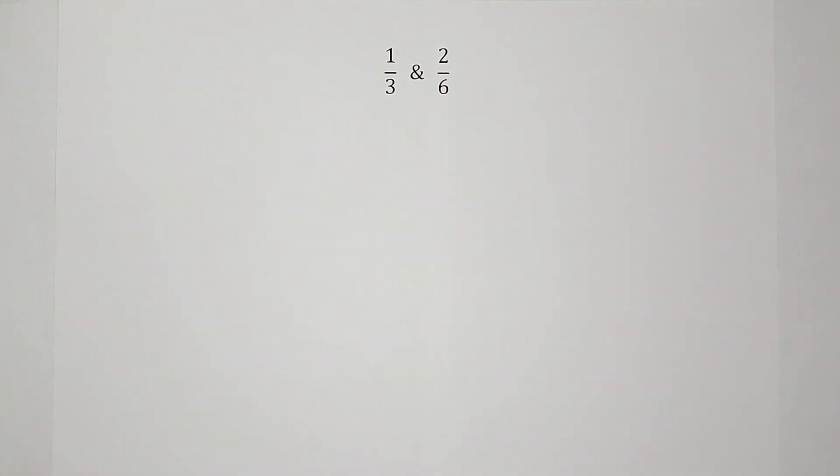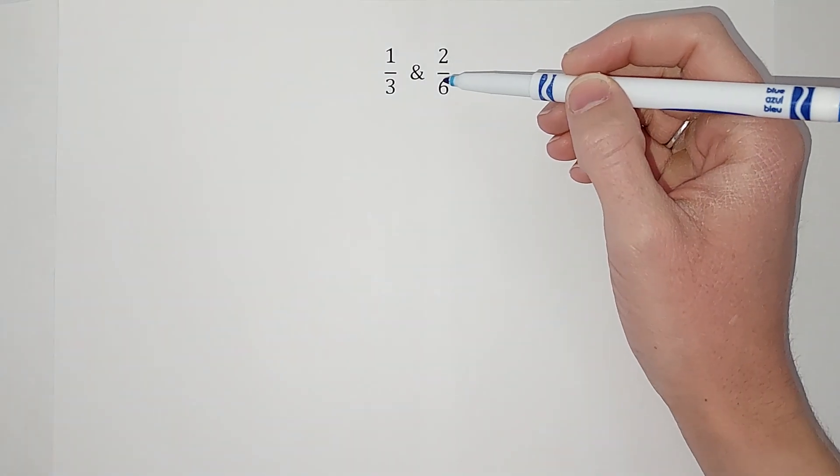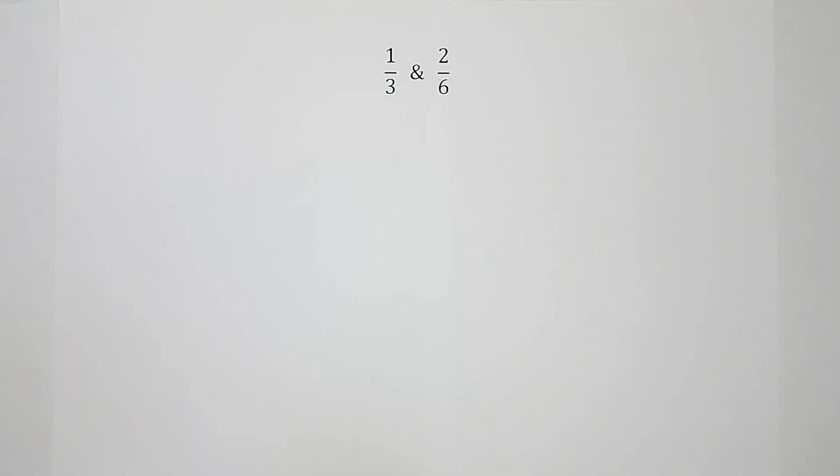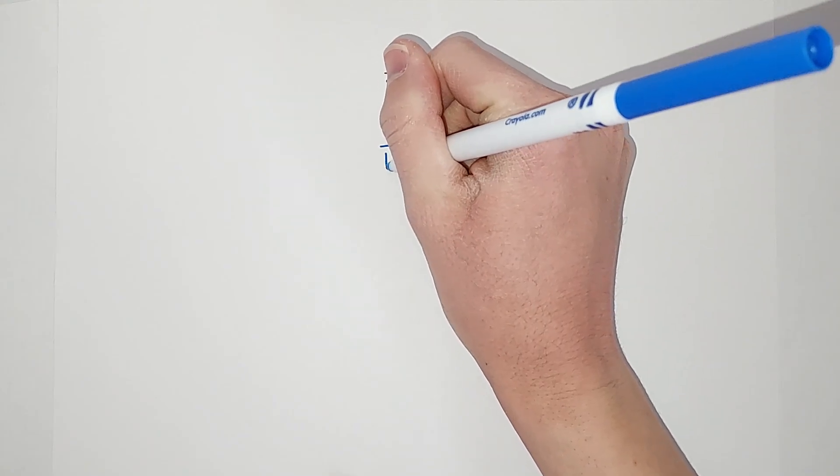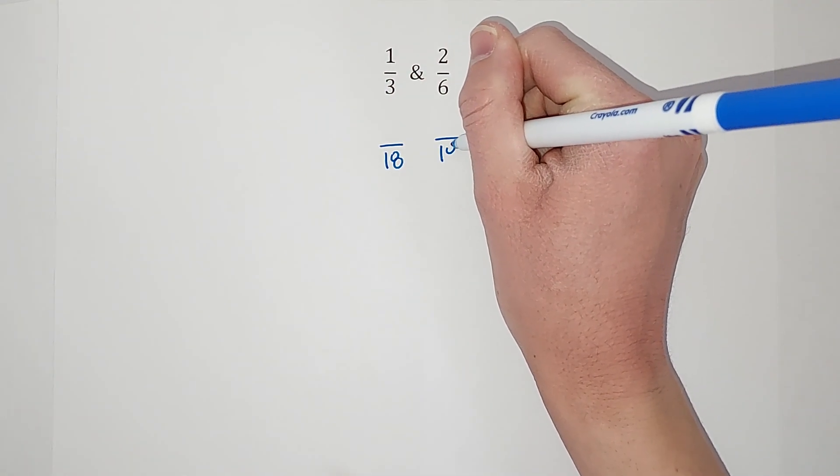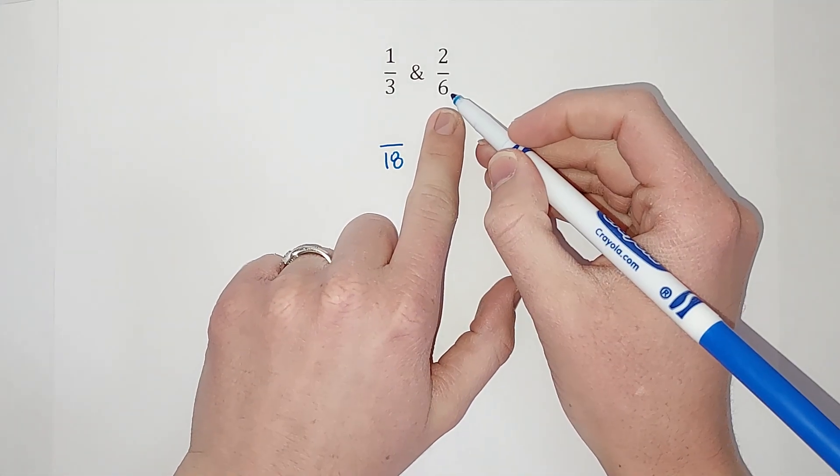I know that six times three gives me 18, right? So I know both of these numbers go into 18. So I'm going to try to get both of these fractions to have a denominator of 18.